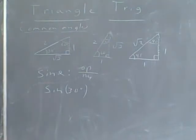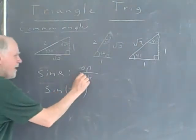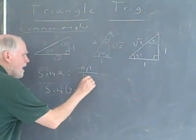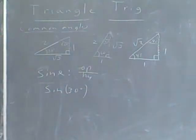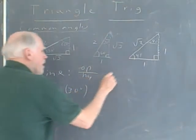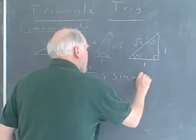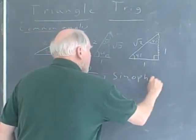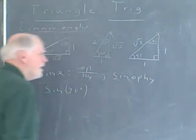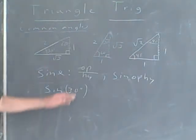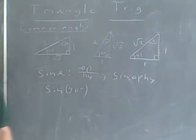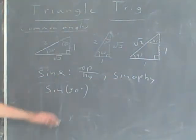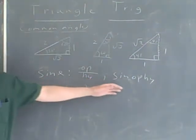A neat way to remember that is the word 'SOH' — sine equals opposite over hypotenuse. There are three little words you can learn: SOH, cosity, and tenapad. So we're going to learn the sine, cosine, and tangent. SOH will allow you to remember that it's the opposite side over the hypotenuse.